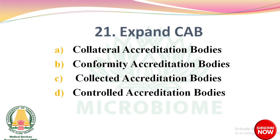Next question: Expand CAB — options: collateral accreditation bodies, conformity accreditation bodies, collected accreditation bodies, controlled accreditation bodies. The right answer is option B: conformity accreditation bodies.